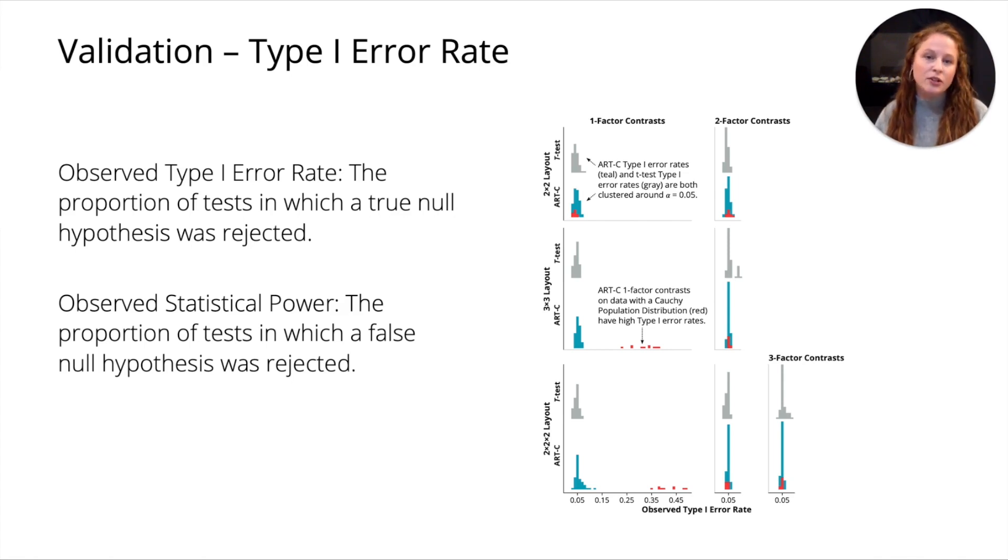We compared ART-C to a t-test because this is common practice in statistics. You can see in the figure on the right, ART-C is in teal and the t-test is in gray. Of all of our different tests, they both have pretty good type 1 error rate. They're both pretty close to 0.05. When you look at the numbers, ART-C is a little bit more tightly packed around 0.05, which means it's a better method. But they both perform pretty well here. Except the points in red are tests on data that were drawn from a Cauchy distribution. A Cauchy distribution is known to be pathological, and many statistical methods break down when used to analyze data drawn from a Cauchy distribution. We talk about this more in our paper.